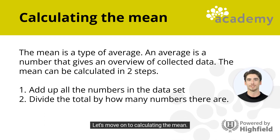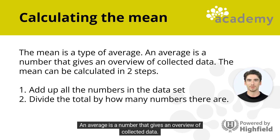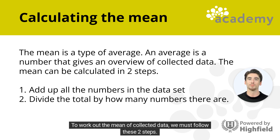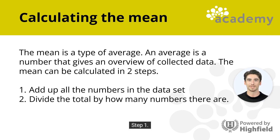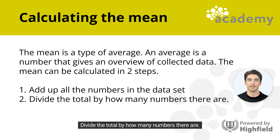Let's move on to calculating the mean. The mean is a type of average — a number that gives an overview of and summarizes collected data. To work out the mean, follow two steps. Step 1: add up all the numbers in the dataset. Step 2: divide the total by how many numbers there are.